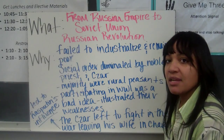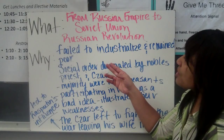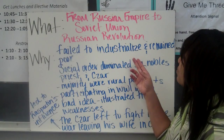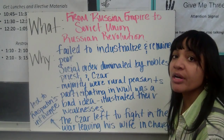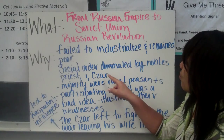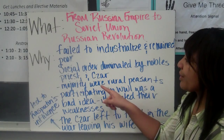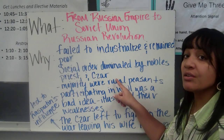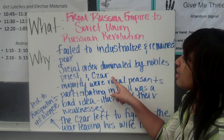But why did the revolution take place? Well, Russia failed to industrialize and they remained poor. The social order was dominated by the nobles, the priests, and the Tsar — the Tsar is considered the king.